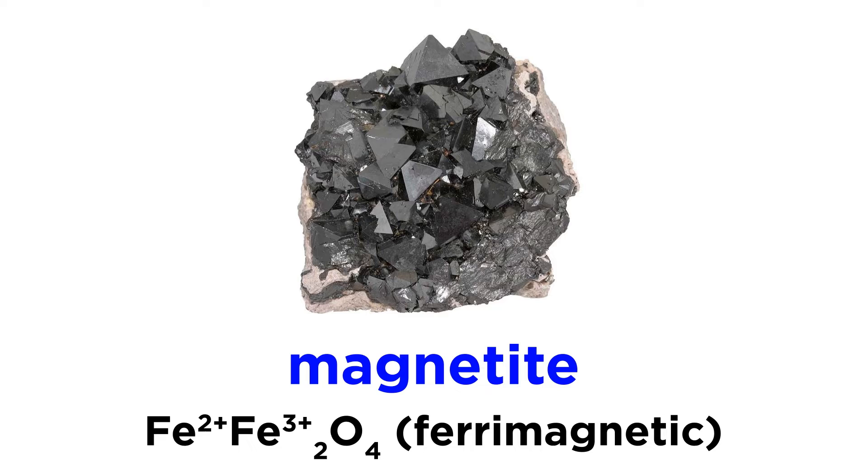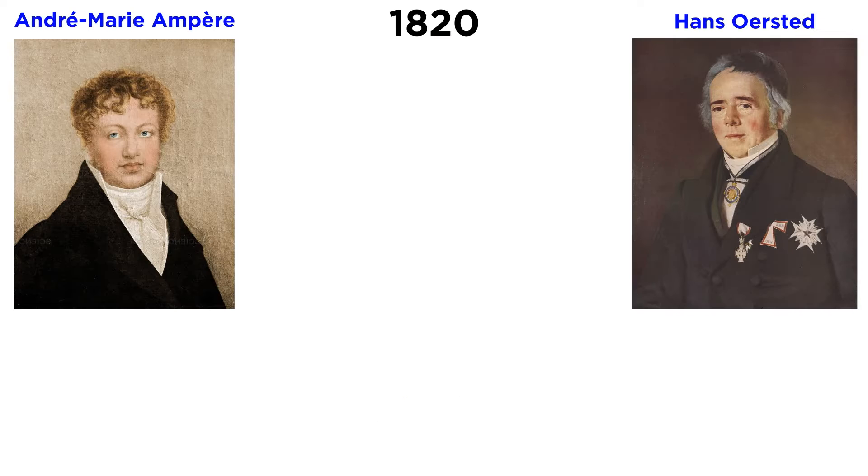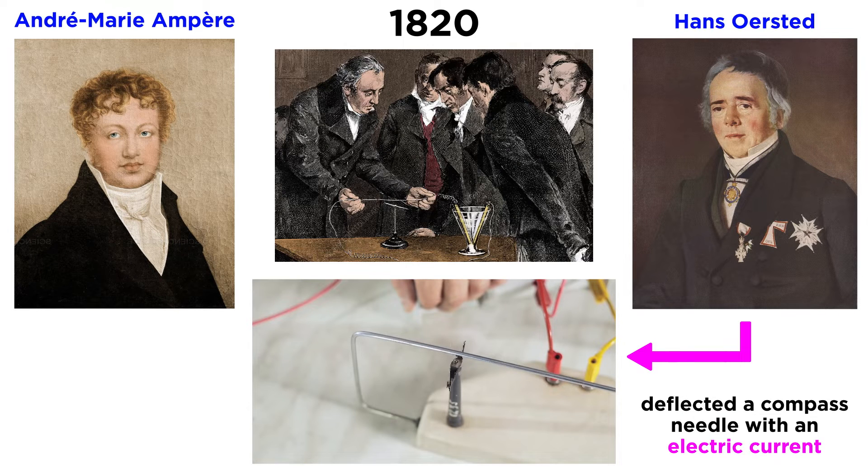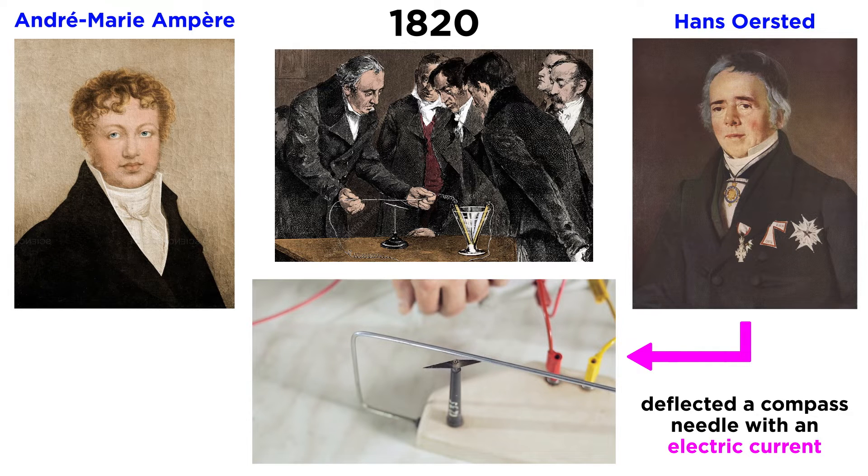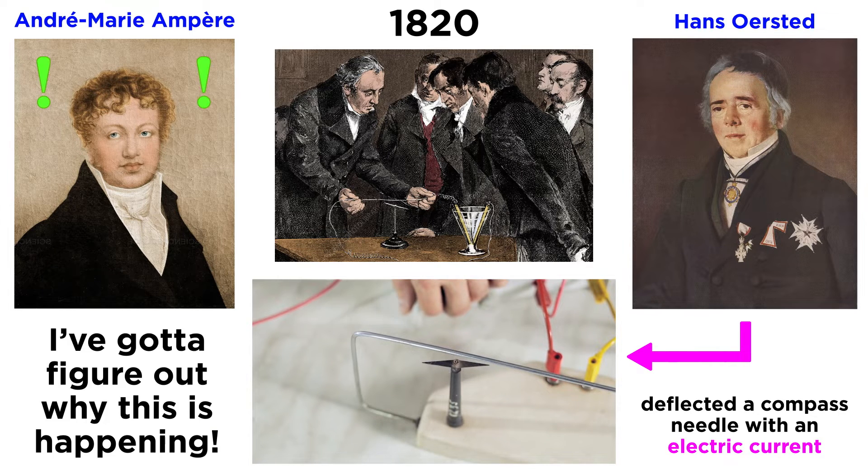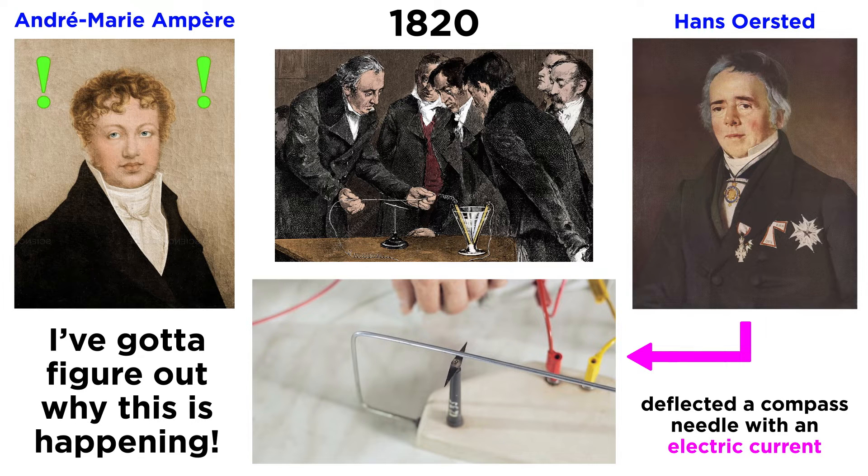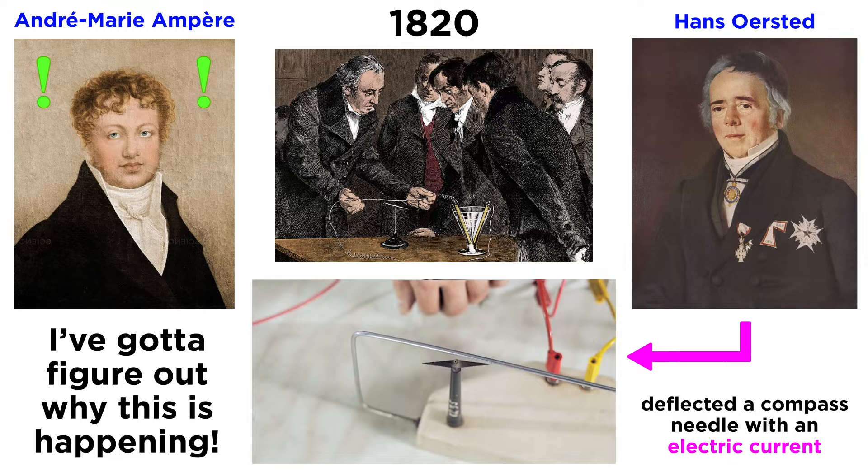For the vast majority of human history, the only known sources of magnetic fields were certain iron ores and other materials that were magnetized in one way or another. In 1820, French physicist André-Marie Ampère heard that in Denmark, Hans Oersted had deflected a compass needle by passing an electric current nearby. Within a week, Ampère had begun quantifying the relationship between electric currents and the magnetic field.